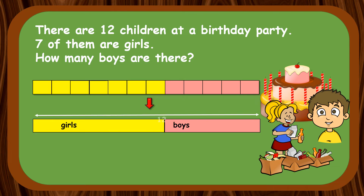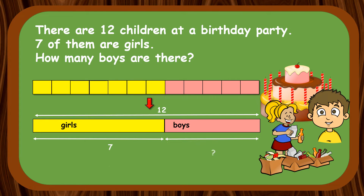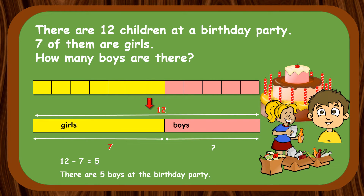We have a total of 12 children. Seven of them are girls, so the rest of them are boys. From the diagram, we notice the total number of boys is the difference between the total number of children and the number of girls. 12 minus 7 equals 5. Therefore there are 5 boys at the birthday party.